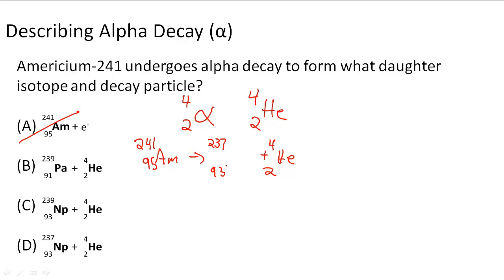So now I have to find the atom that has 93 atomic number, and that's going to be Np.